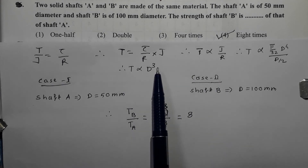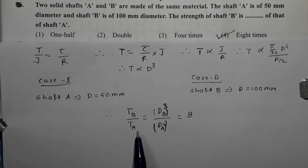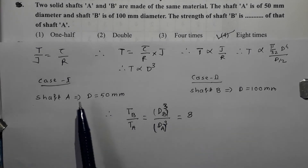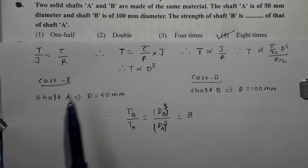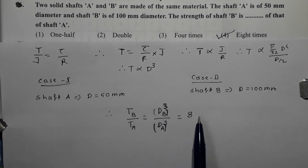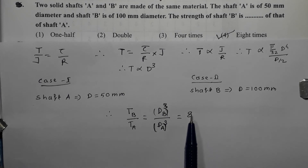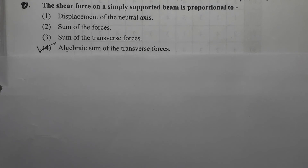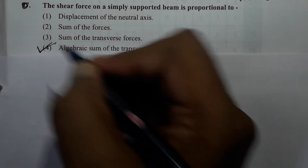Since T is proportional to D³, TB/TA = DB³/DA³. DB is 2 times DA, so it will be 2³ = 8. The correct option is option number 4. Next question: The shear force on a simply supported beam is proportional to the — four options are given. Shear force is the algebraic sum of the transverse forces, and that is why option 4 is the correct option.